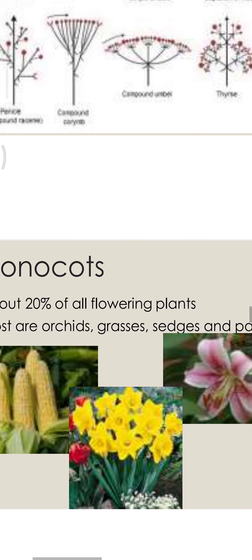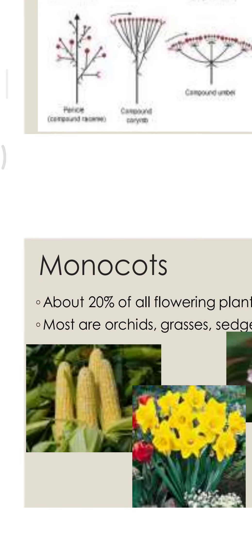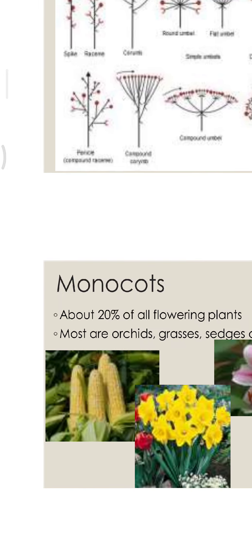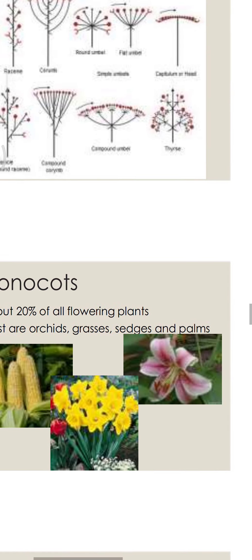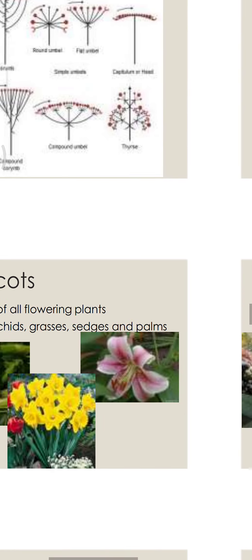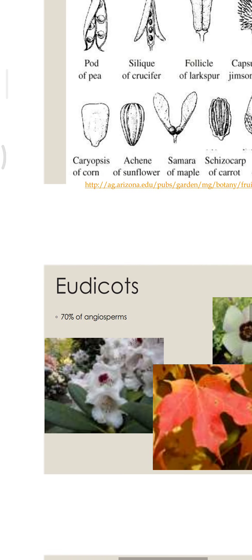Now monocots. About 20% of all flowering plants constitute a broad group called monocot. Most are orchids, grasses, sedges, and palms.